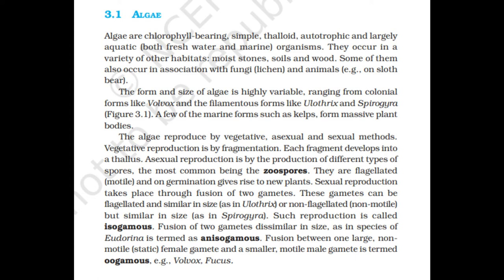Fusion of two gametes dissimilar in size, as in species of Eudorina, is termed anisogamous. Fusion between one large non-motile female gamete and a smaller motile male gamete is termed oogamous, for example in Volvox and Fucus.